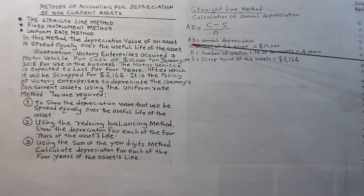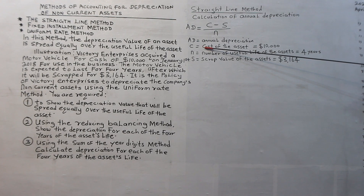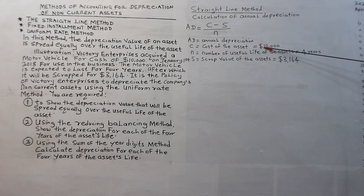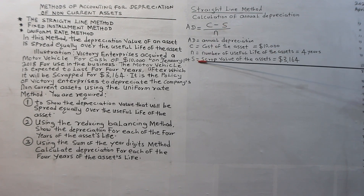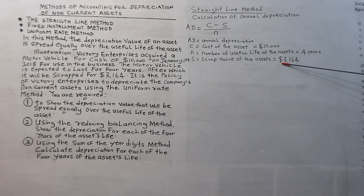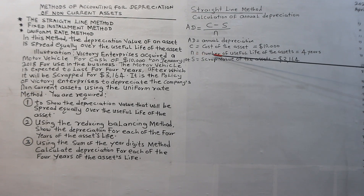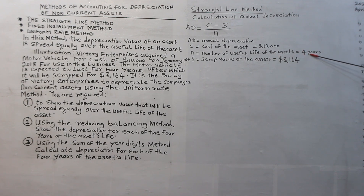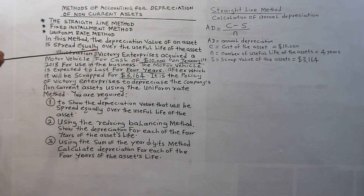In the formula, AD represents annual depreciation. C represents the cost of the asset — in our equation, that is $10,000. S represents the scrap value of the asset, which is $3,164. N represents the number of years of useful life of the asset, which is 4 years.